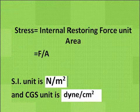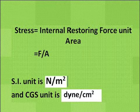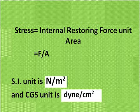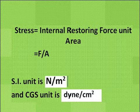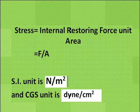First, stress. What is stress? Stress is internal restoring force per unit area. When we apply force on any body, there is a reaction force — the internal restoring force. If we divide that force by area, we get stress. The SI unit of stress is Newton per meter square, and the CGS unit is Dyne per centimeter square.